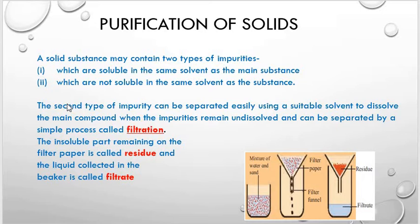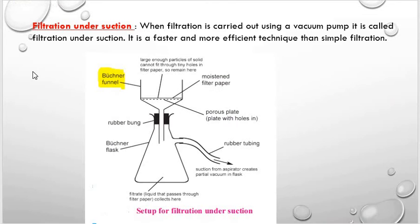This is exactly like the process used to separate tea leaves from a decoction of tea, or sand from a mixture of sand and water. Filtration is carried out with the help of filter paper. As you can see in the diagram, the filter paper is placed in a funnel — a circular piece is folded to form a cone and fitted inside. The funnel is fixed on a stand, the beaker is kept below it, the paper is moistened, and the solution is poured on the filter paper. The insoluble part remaining on the filter paper is called the residue, and the liquid collected in the beaker is called the filtrate.